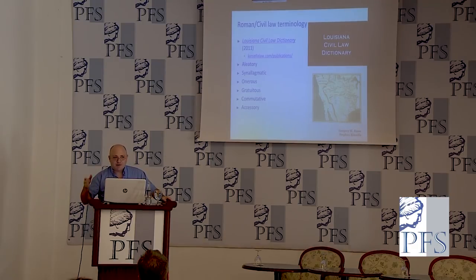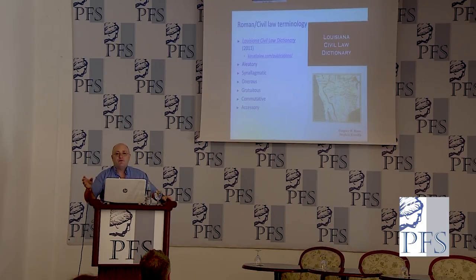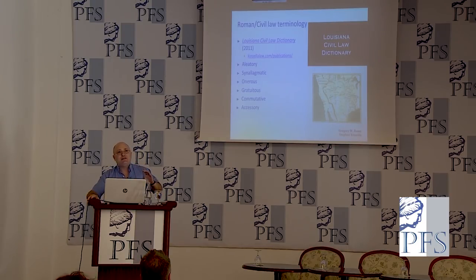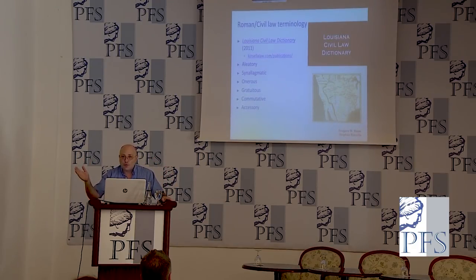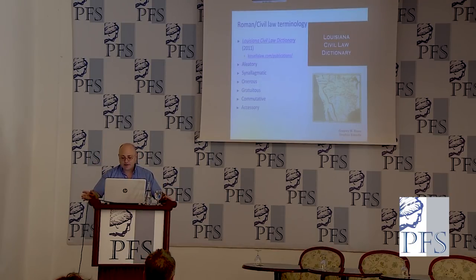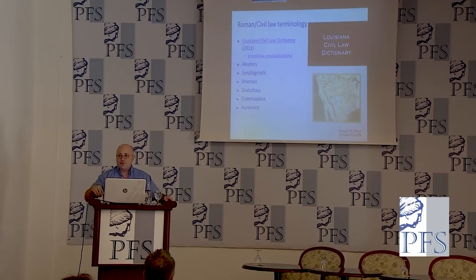One of my lesser-known books is a legal dictionary of Louisiana civil law terms — a Roman-law-based system — and actually many classification terms would apply to these contract types, though I kept it descriptive here. We have words like aleatory contracts, synallagmatic contracts, onerous, gratuitous, commutative, and accessory contracts — different classifications according to the mixtures of conditions, the nature of things being transferred.